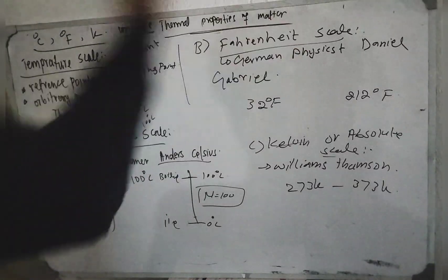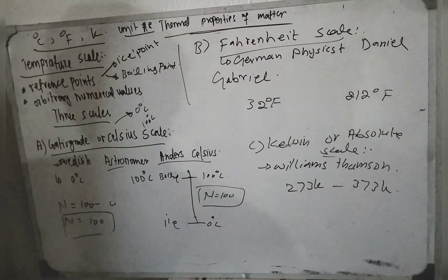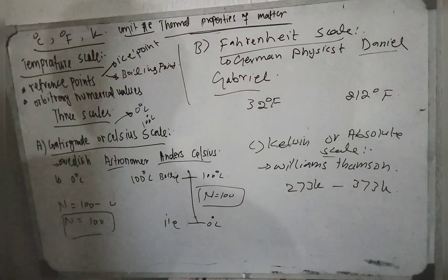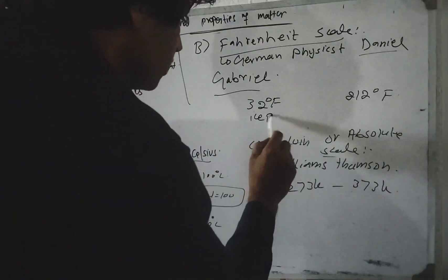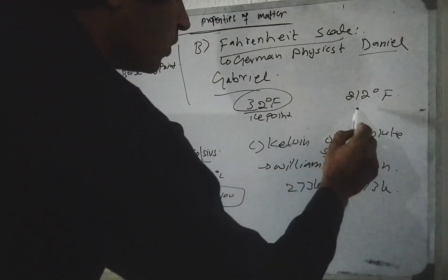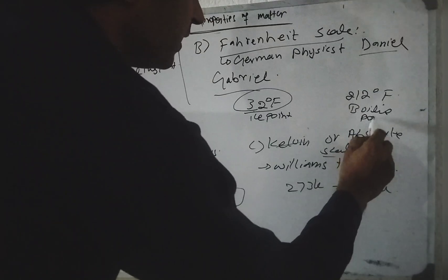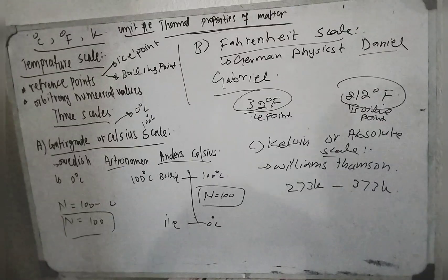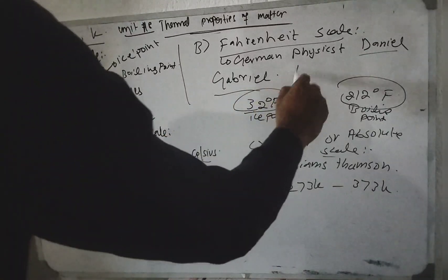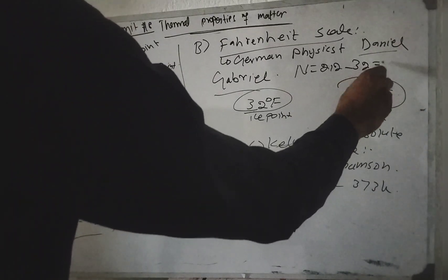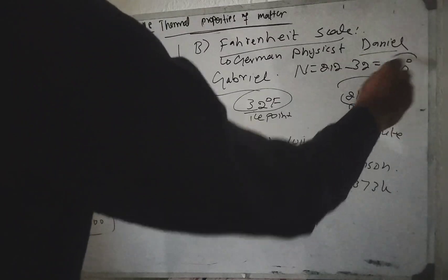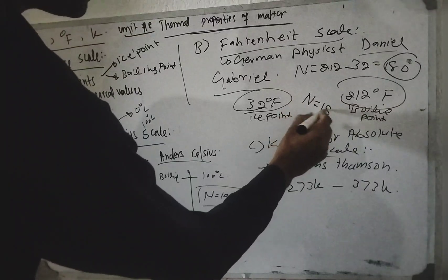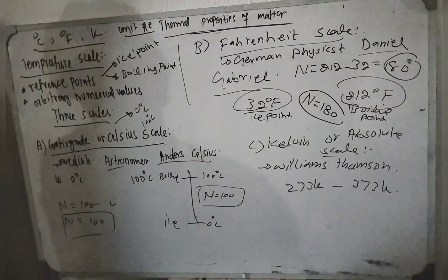The Fahrenheit scale was developed by German physicist Daniel Gabriel Fahrenheit. On this scale, the ice point is 32 degrees Fahrenheit and the boiling point is 212 degrees Fahrenheit. The total number of divisions is 212 minus 32, which equals 180 divisions.